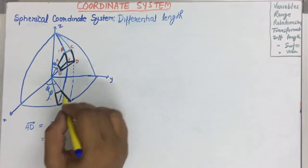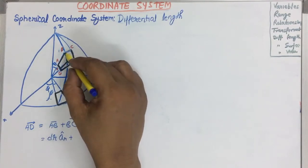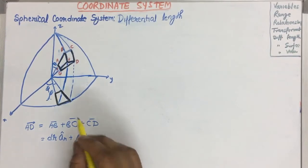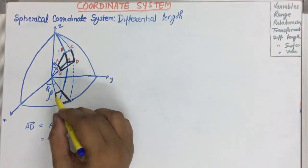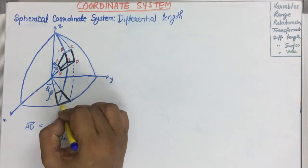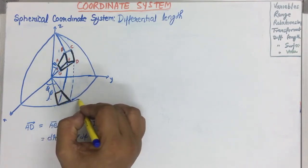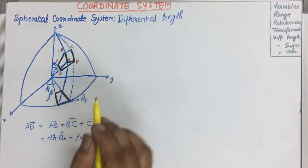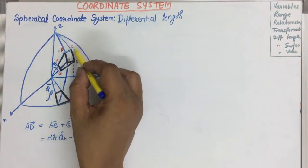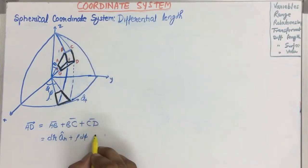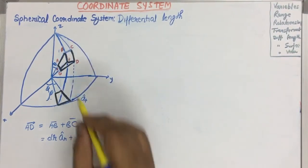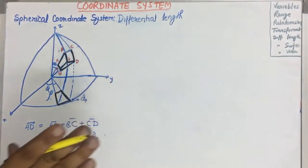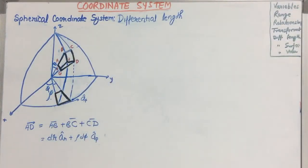So ρ·dφ will be equal to ρ·dφ. So BC can be written as ρ·dφ, and the direction of φ is changing in this direction, so it is the Aφ direction. BC is in the direction of Aφ, moving at the surface, tangent to the surface.